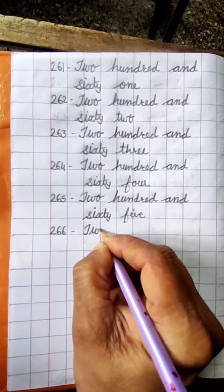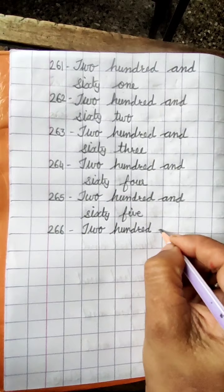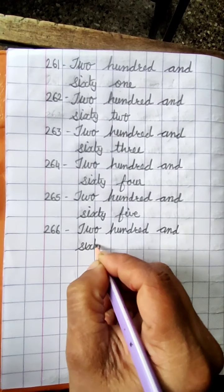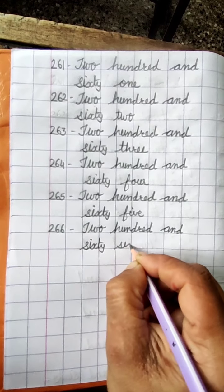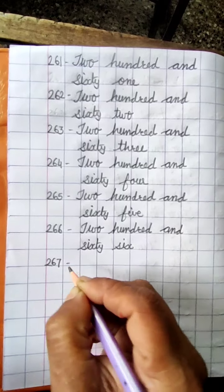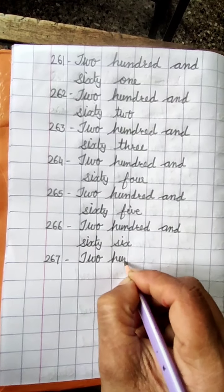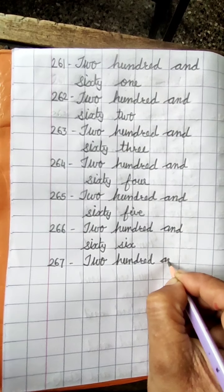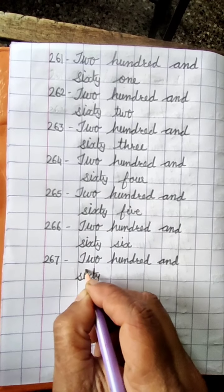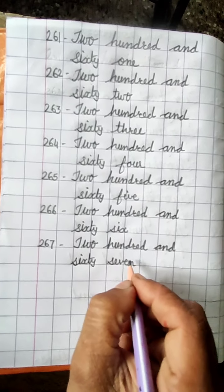266: T-W-O, two; H-U-N-D-R-E-D, hundred; A-N-D; S-I-X-T-Y, sixty; S-I-X, six — two hundred and sixty six. 267: T-W-O, two; H-U-N-D-R-E-D, hundred; A-N-D; S-I-X-T-Y, sixty; S-E-V-E-N, seven — two hundred and sixty seven.